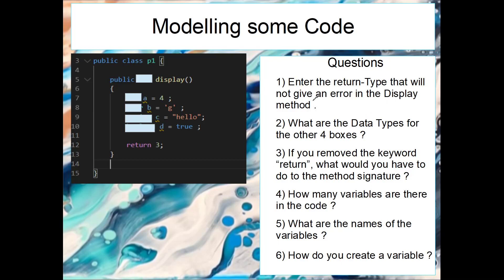Okay, so hopefully you stopped the video. Let's go through them. We can see our display method here and we can see that we have that access modifier. If we look here, what return type do we need? We can see that after we call our method or when this method is executed it will return a three.